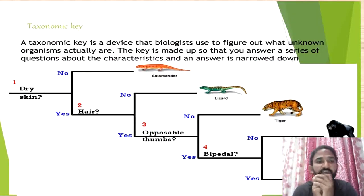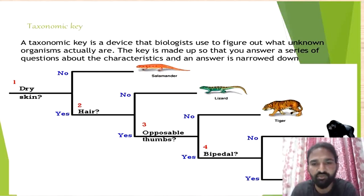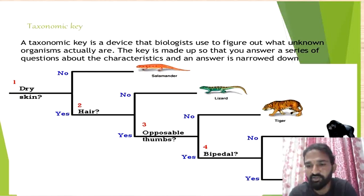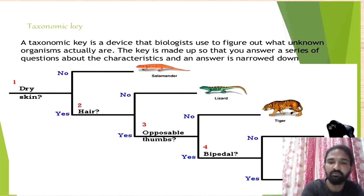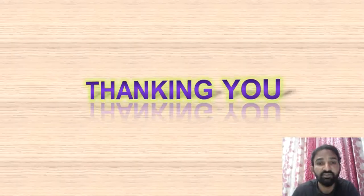This is a taxonomical key used to identify unknown species. Here we take the character of skin — either dry skin or wet skin: in salamander, dry skin is not present; in human being, dry skin is present. Coming to hair: in lizard, there is no hair on the body surface; human being contains hair. Opposable thumbs are present in human being but not in tiger; bipedal activity is shown by human being but not by gorilla. So dry skin, hair, opposable thumb, and bipedal are the keys that represent human being, separating them from other animals. Keys are used for the identification of animals as well as plants. Thank you.